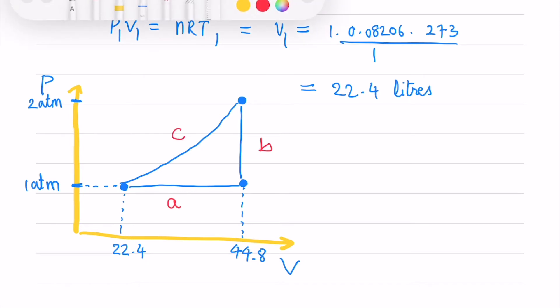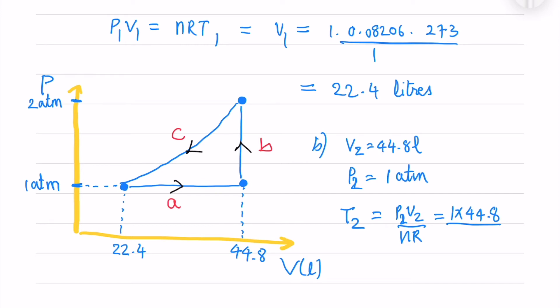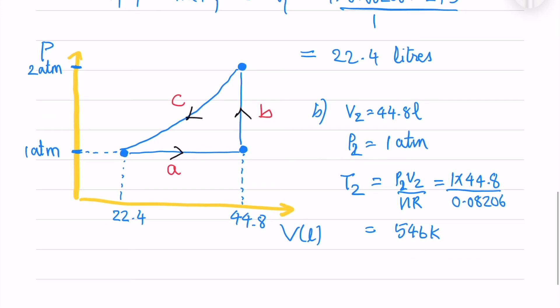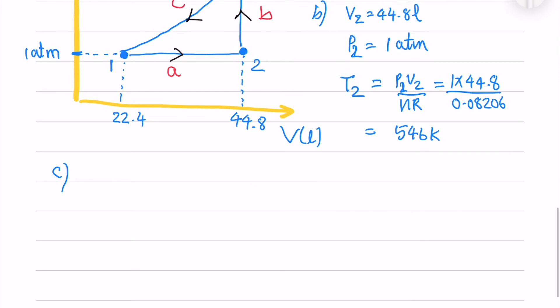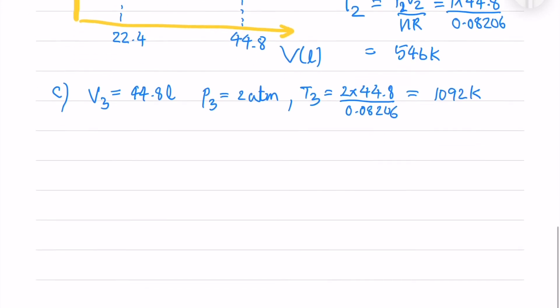So there are 3 processes A, B and C processes which goes from 1st state to 2nd state to 3rd state. So for the 2nd process we have volume V2 is 44.8 liters. Pressure and temperature we have to measure it using ideal gas equation which gives 546 Kelvin. Now for the C process we need to find the volume. We know the volume. Pressure and temperature is 1092 Kelvin.